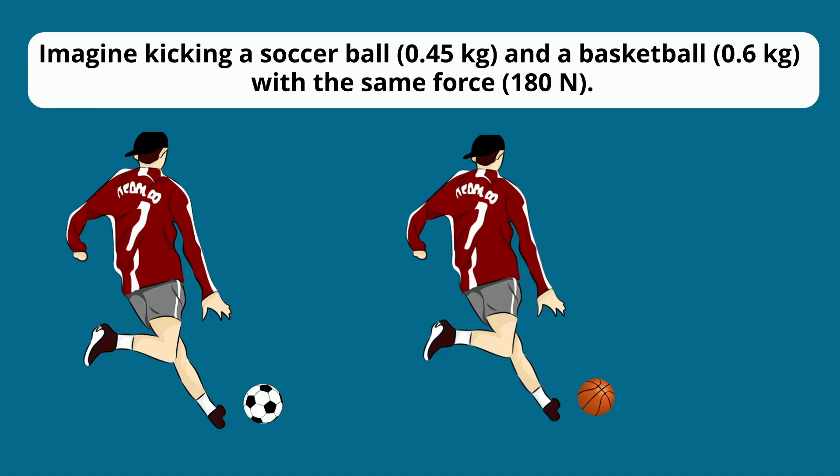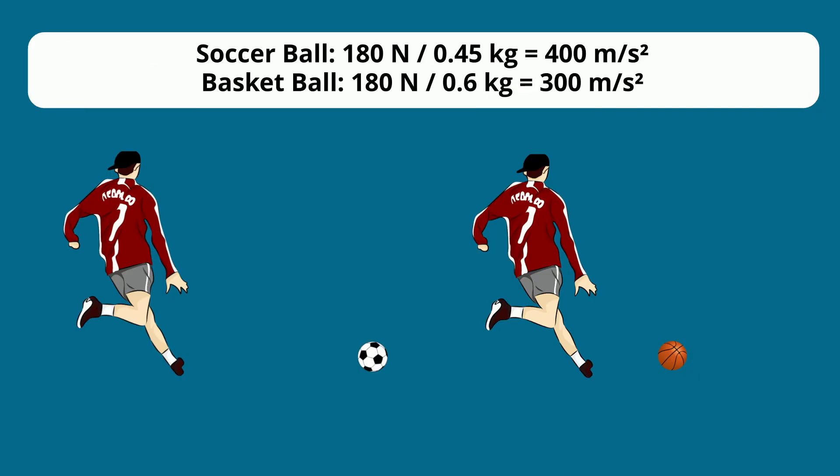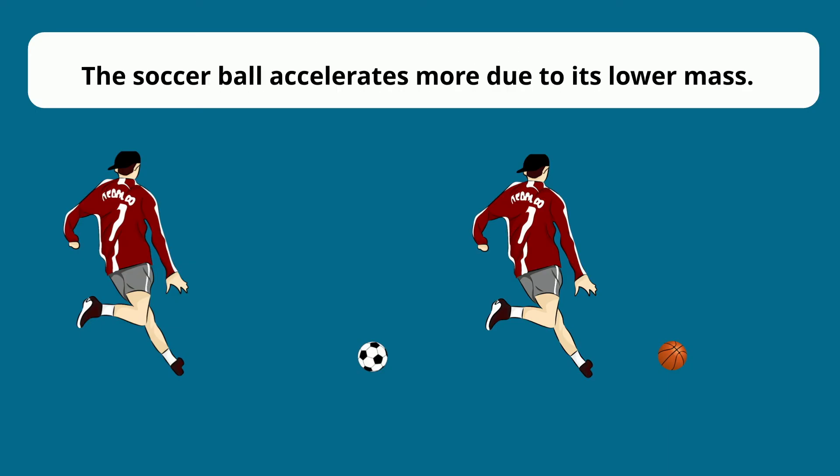Imagine kicking a soccer ball and a basketball with the same force. The soccer ball would accelerate to 400 meters per second squared, and the basketball would accelerate 300 meters per second squared. This calculation shows that you would take the force divided by the mass to find the acceleration. The soccer ball accelerates more due to its lower mass.